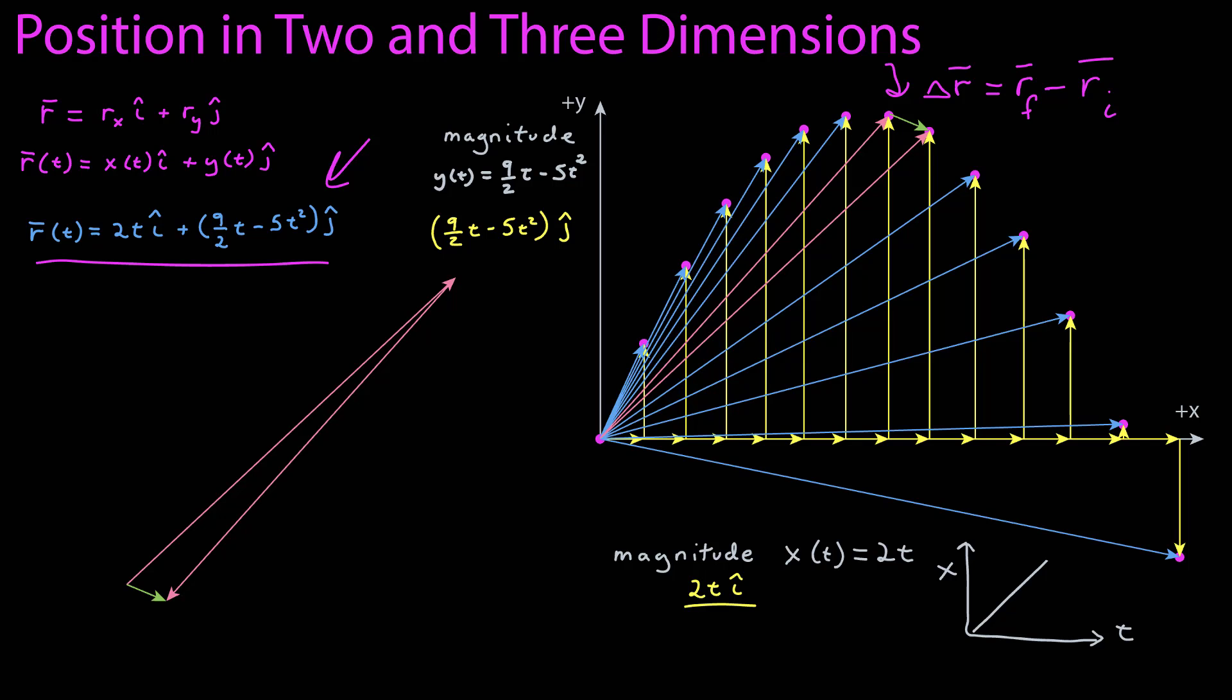And in that way, the position vector, which is a function of your coordinate system, can give you displacement vectors, which are independent of the coordinate system itself. It tells you directly the vector between two points in time.